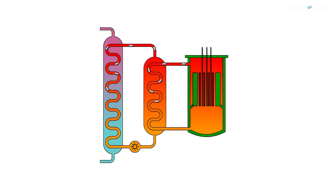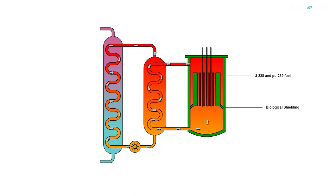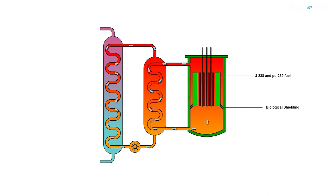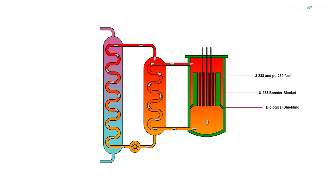Liquid metal fast breeder reactors have a mixture of non-fissile uranium-238 and fissile plutonium-239 as fuel. The fuel is surrounded by a blanket of uranium-238. This blanket captures the neutrons produced in the fission and transforms the uranium-238 to plutonium-239.